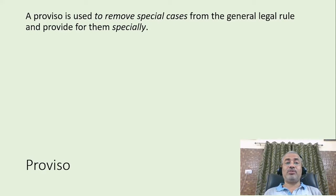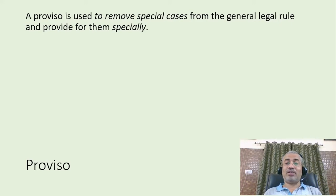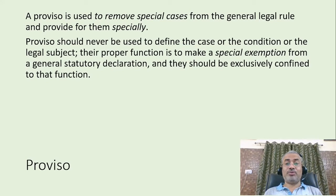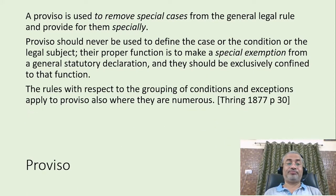Proviso. A proviso is used to remove special cases from the general legal rule. In the case of an exception, the rules are not applied at all. But in the case of a proviso, it is not that the general legal rules are not applied — rather, they are applied in a special way. Proviso should never be used to define the case, the condition, or the legal subject. Their proper function is to make a special exemption from a general statutory declaration and should be exclusively confined to that function. The rules with respect to the grouping of conditions and exceptions apply to provisos also where they are numerous.